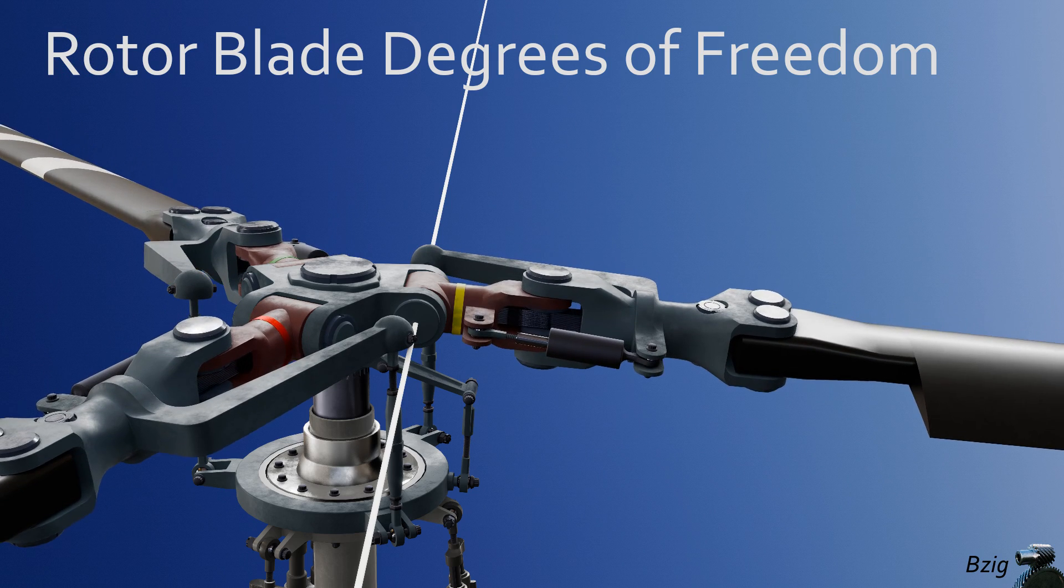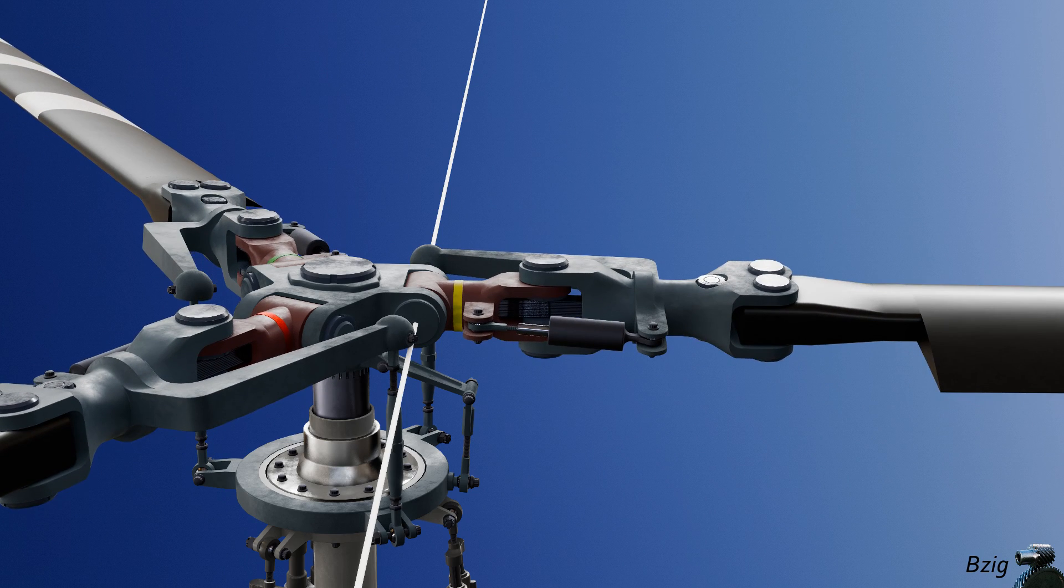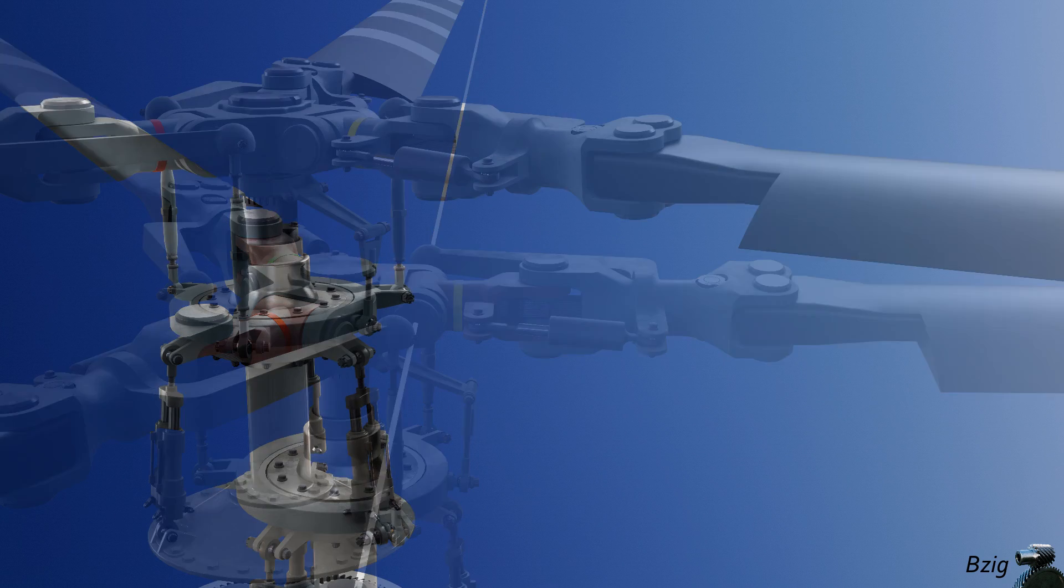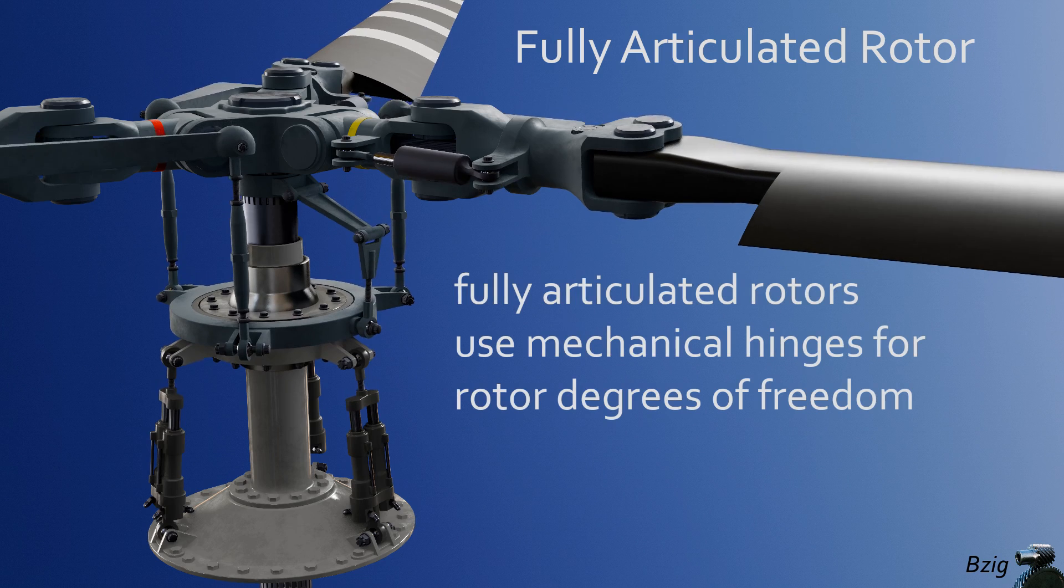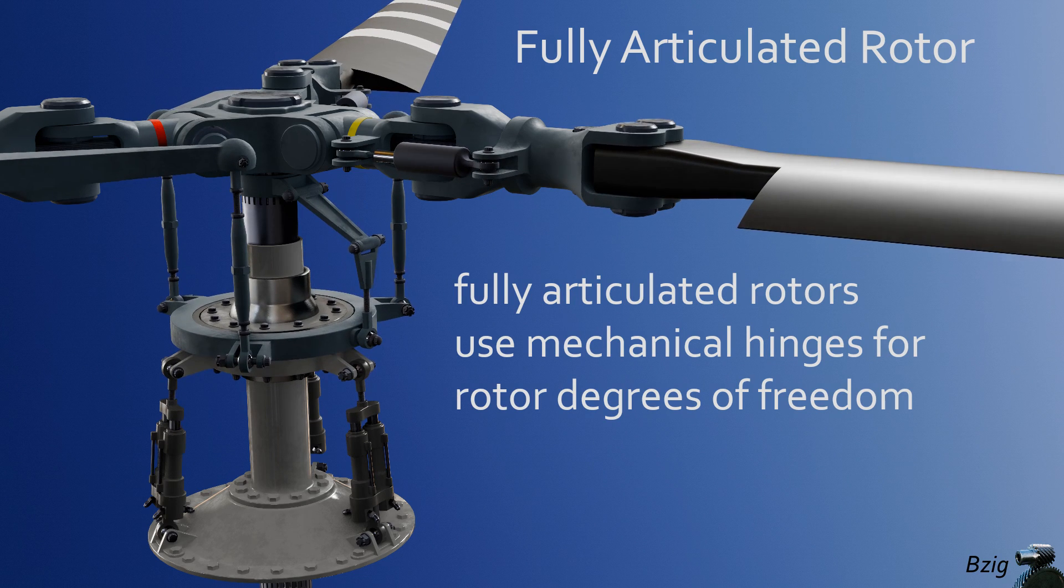In the video that you're seeing on the screen, all of the degrees of freedom that I've talked about are done by mechanical hinges. The type of main rotor that uses mechanical hinges for these degrees of freedom is called a fully articulated rotor.